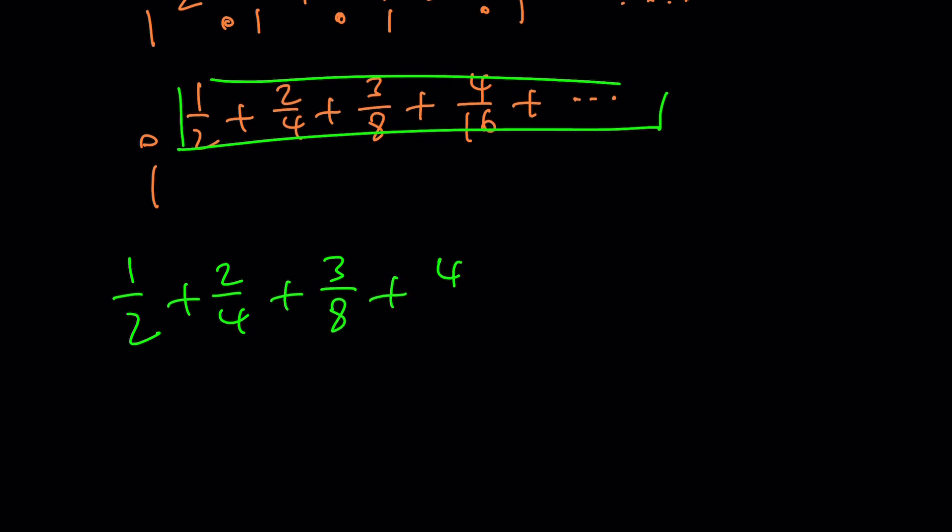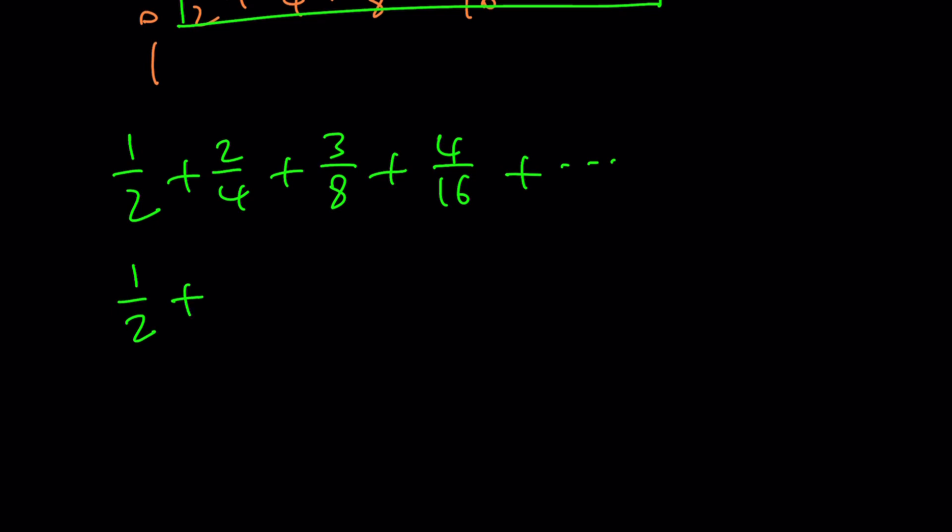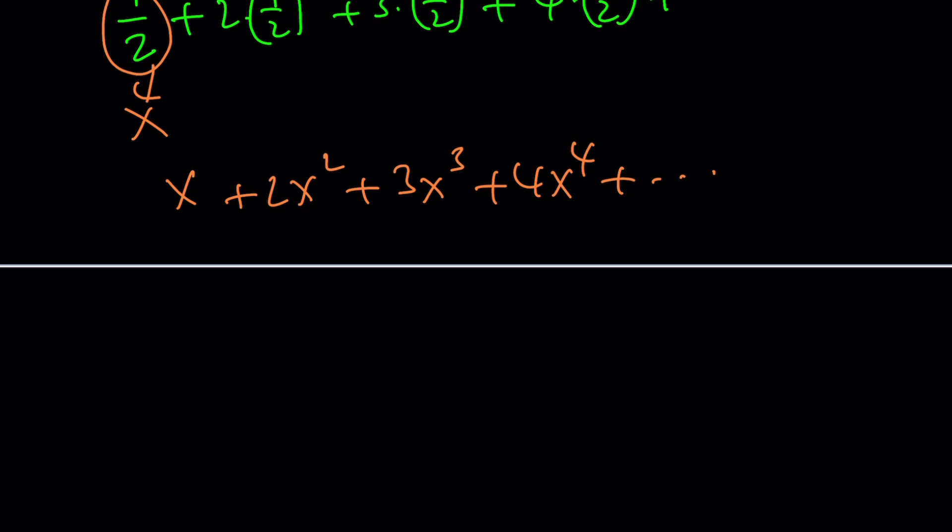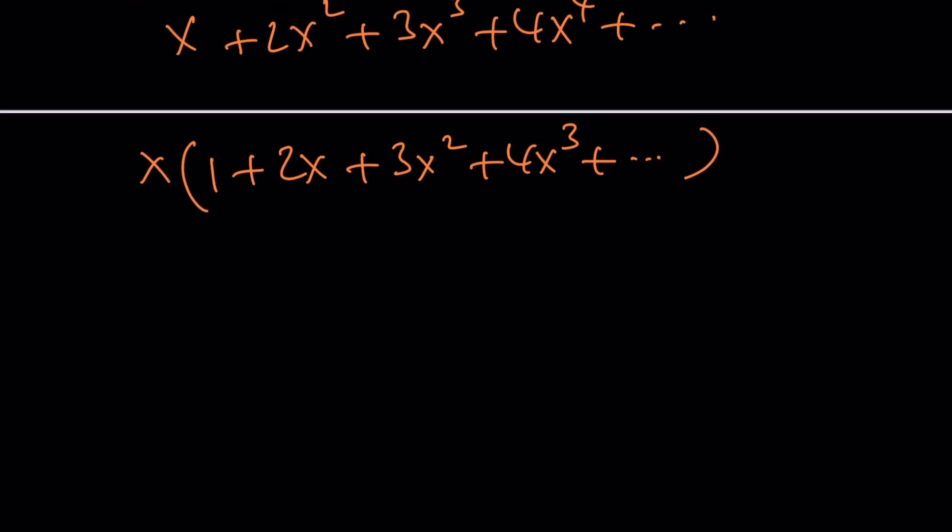I'm going to write this as one half plus two times one half squared plus three times one half to the third, remember where those powers come from, and then one half to the fourth power from the radical. If we call this number x, we get x plus two x squared plus three x cubed plus four x to the fourth power, and so on. If you can evaluate this, we can go back and do the whole thing. Factor out an x. You can look at it one more time and realize that three x squared is the derivative of x cubed, two x is the derivative of x squared. If you write an expression like this and call that s, s prime is just one plus two x plus three x squared plus four x cubed. So this is exactly s prime.